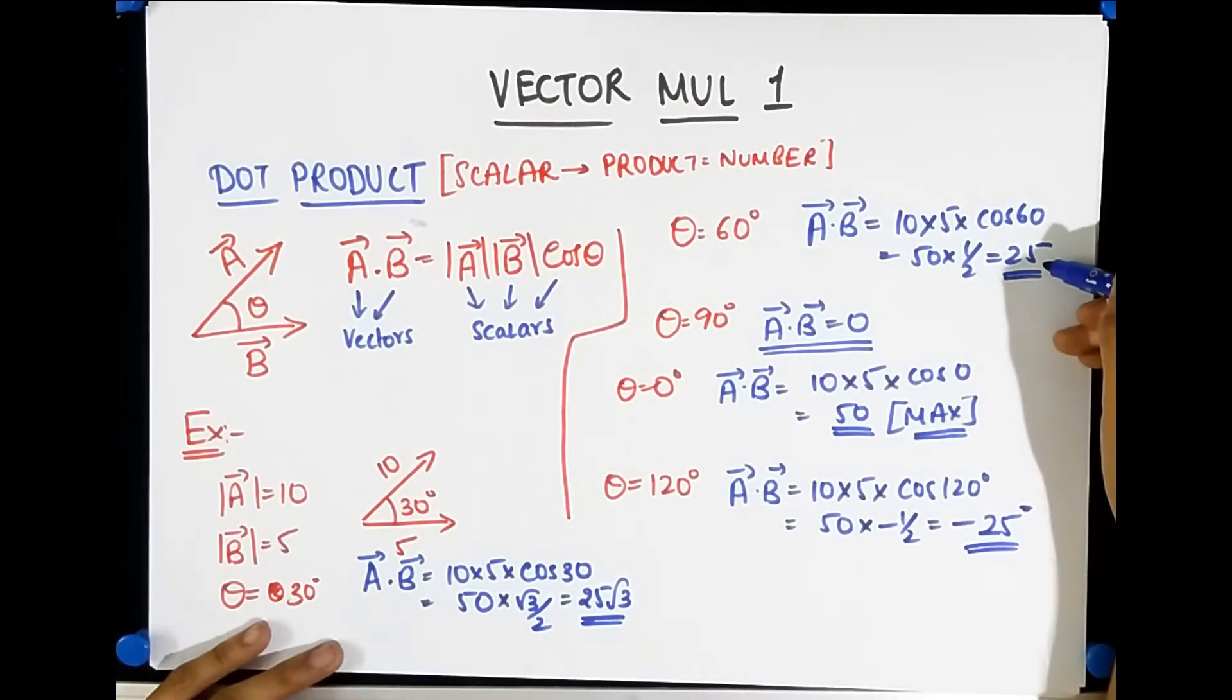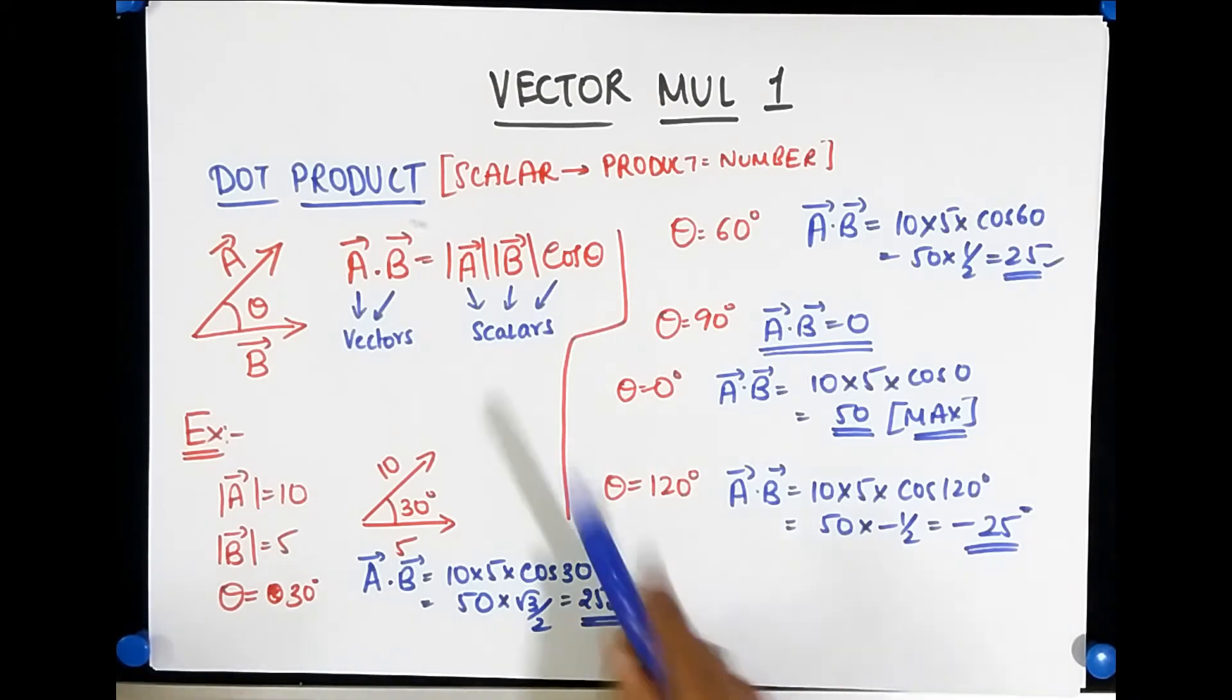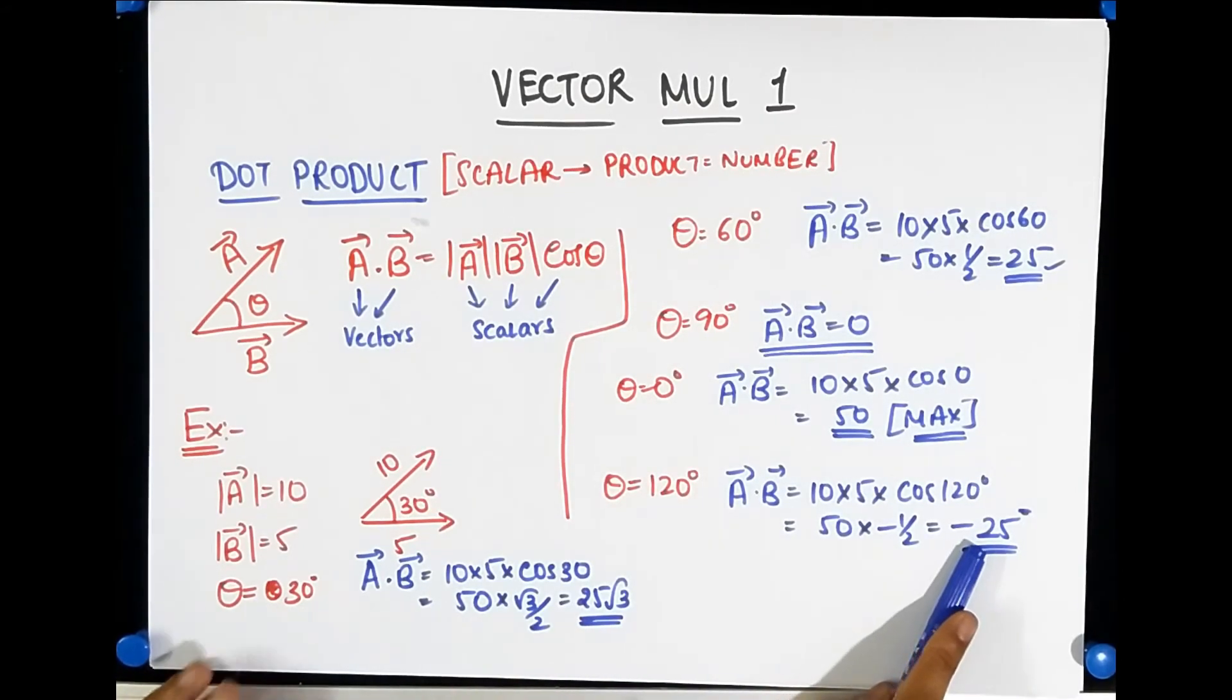It's the same as this, but you're getting a negative answer. So the negative answer signifies something. What does it signify? It's a scalar, right? What does a negative scalar signify?